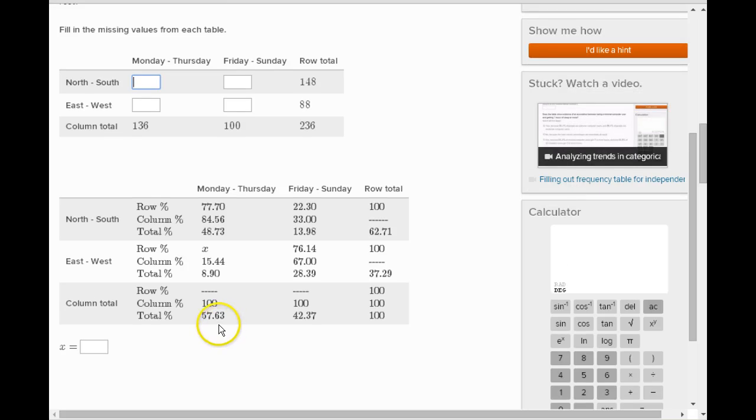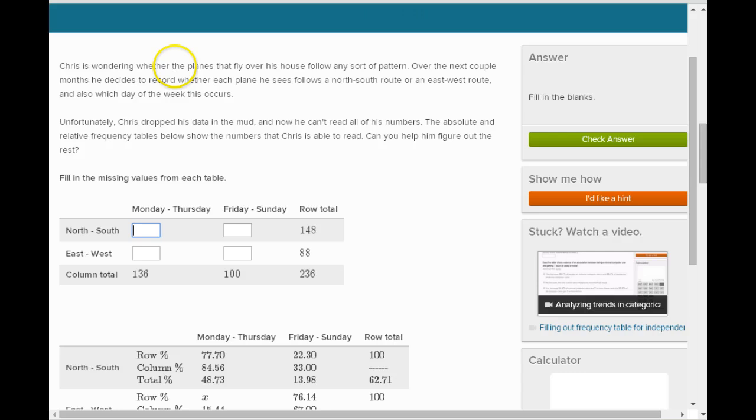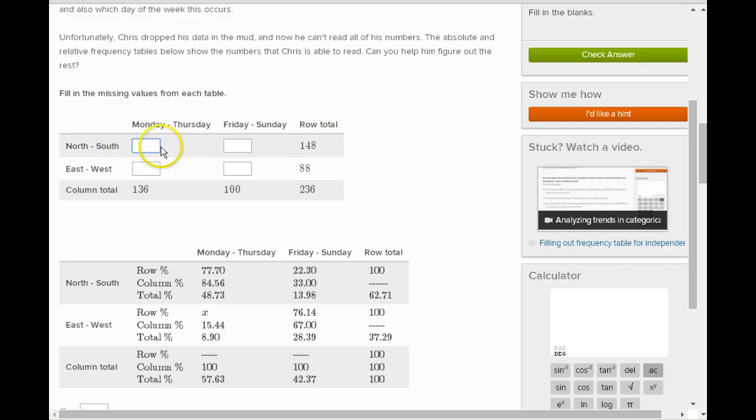So he has this data here, right, everything that's here he has. What he doesn't have is the missing values. Okay, so the values that are missing. Well what we know is that this is a count, a total count of all the, I think it was planes that he counted. He counted planes, he recorded how many planes flew over his house.